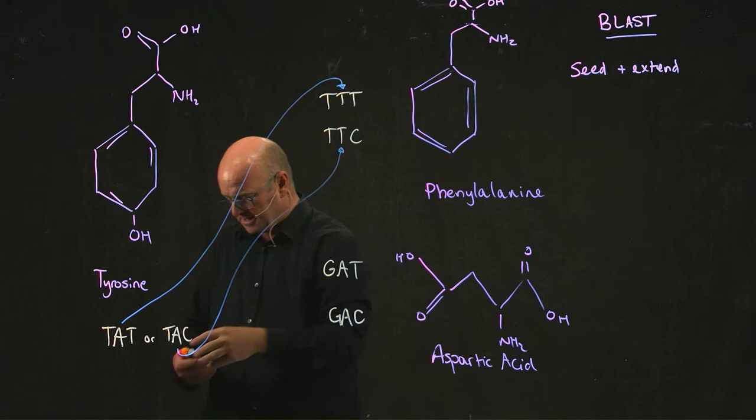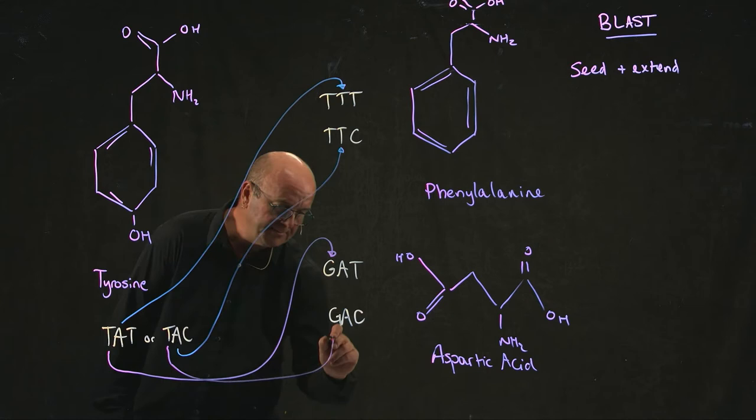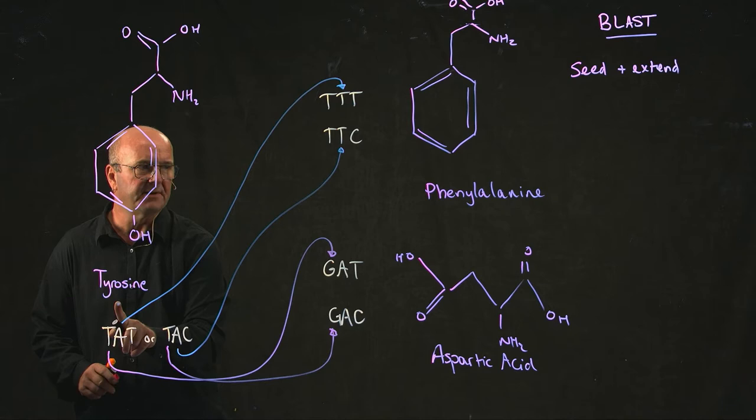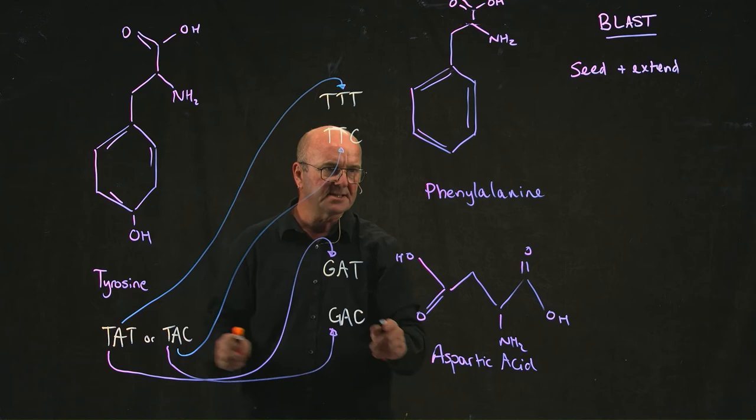However, at the DNA level, I can also make one little base pair change here or one little base pair change here. And I can switch from saying, I want to put tyrosine in my protein sequence to putting aspartic acid in my protein sequence. So to go from tyrosine to phenylalanine or tyrosine to aspartic acid, you only have to make one base pair change.